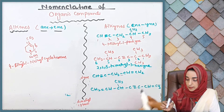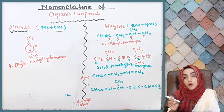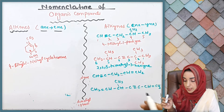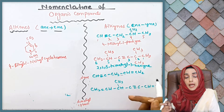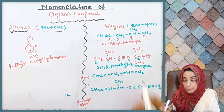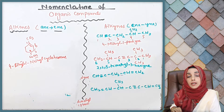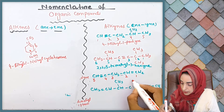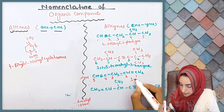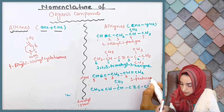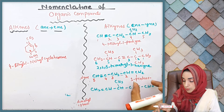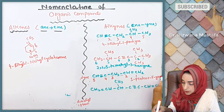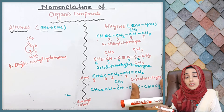So we write: 2,2,5-trimethyl-3-hexyne. It is also possible that where there is a triple bond, you also find a double bond. So wherever both triple and double bonds appear together within a molecule, you must give preference to the double bond over the triple bond. When numbering, give the lower number to the carbon where the double bond begins. So we number: one, two, three, four, five — and write: 1-penten... then add the position of the triple bond using 'yne'.